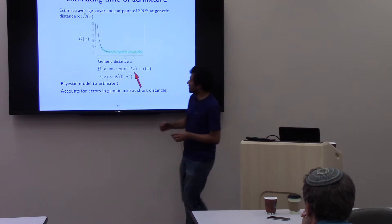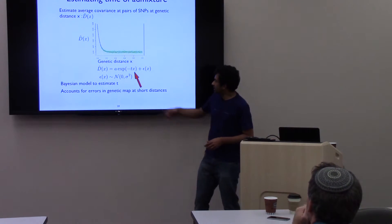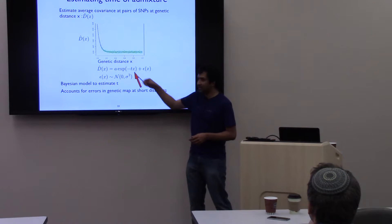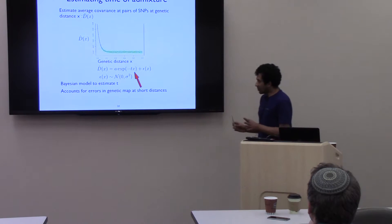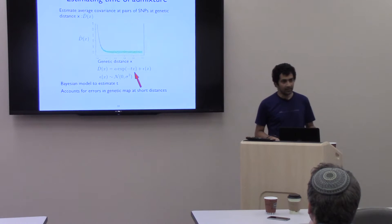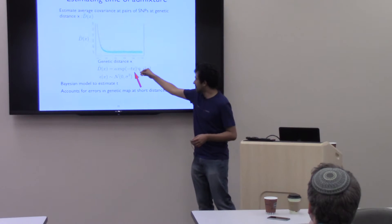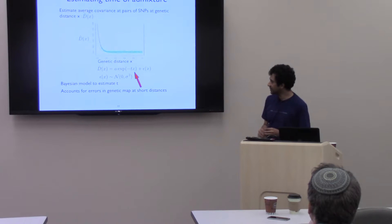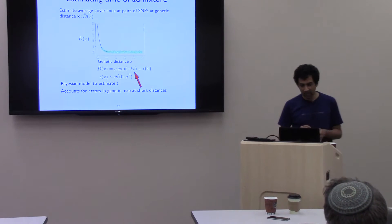We plot an estimator of the covariance as a function of genetic distance x and fit an exponential curve to this decay function. The rate of decay is interpreted as the time of admixture. One additional technical issue: the genetic distances x are themselves estimated from recombination data and come with errors. We have a Bayesian model that estimates T while accounting for errors in x.